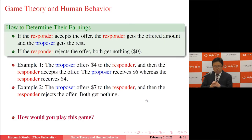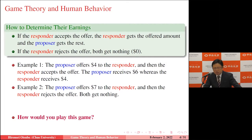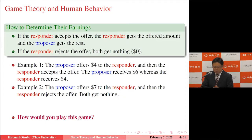Here is the rule to determine their earnings. If the responder accepts the offer, the responder gets the offered amount and the proposer gets the rest. If the responder rejects the offer, both get nothing — $0. Example one: the proposer offers $4 and the responder accepts, so the proposer receives $6 and the responder receives $4. Example two: the proposer offers $7, but the responder rejects, and both get nothing.